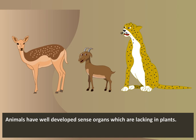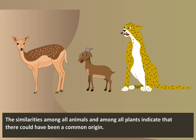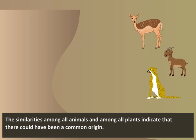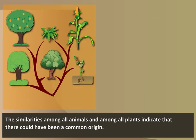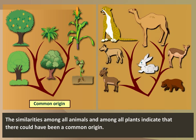Animals have well-developed sense organs, which are lacking in plants. The similarities among all animals and among all plants indicate that there could have been a common origin.